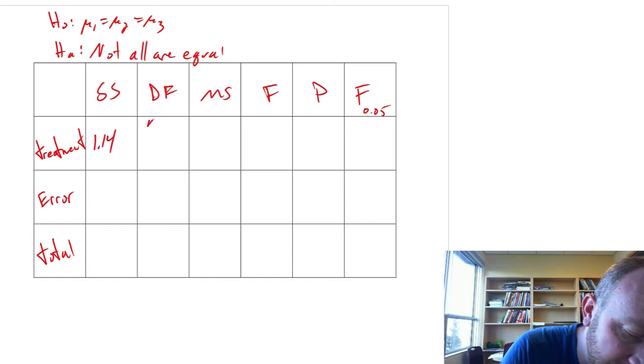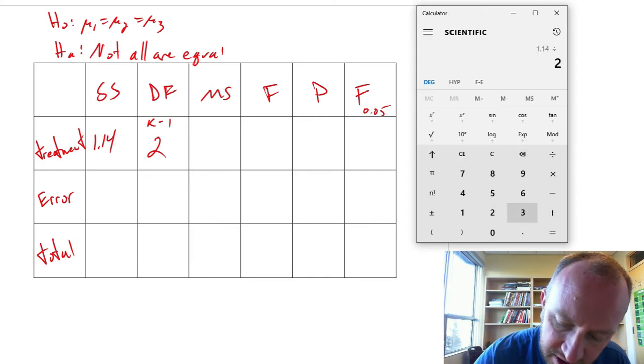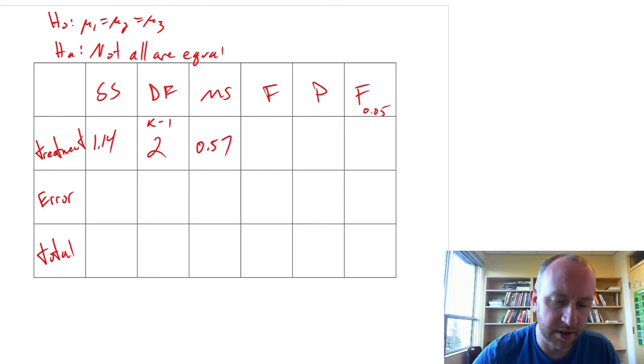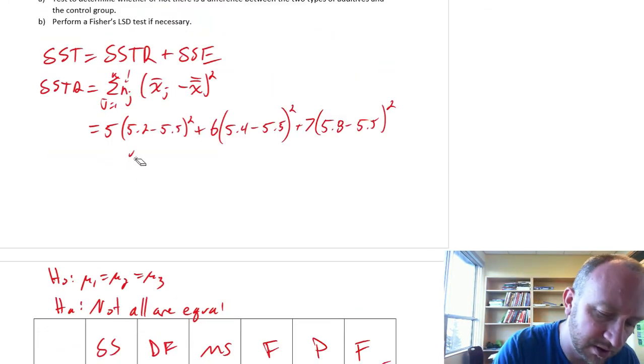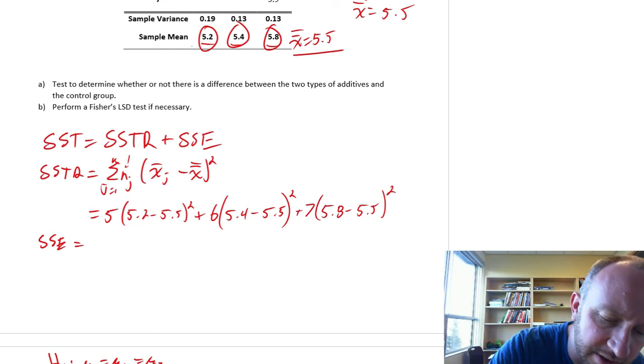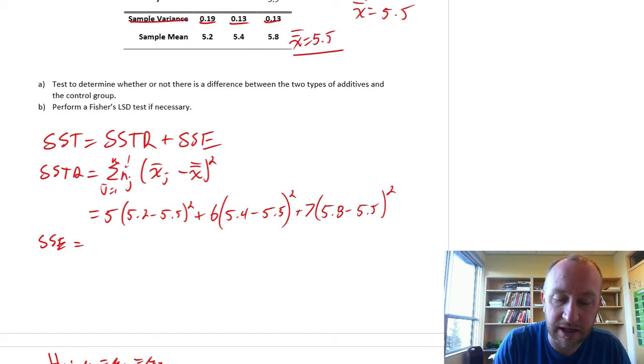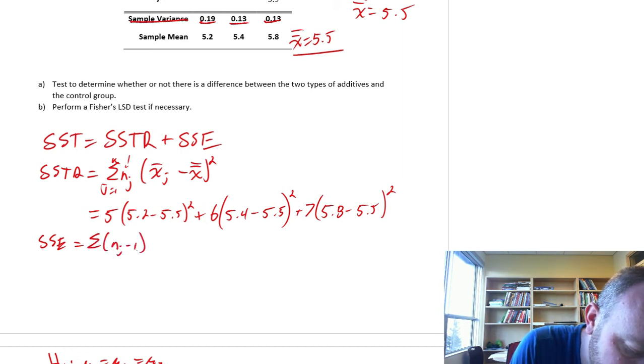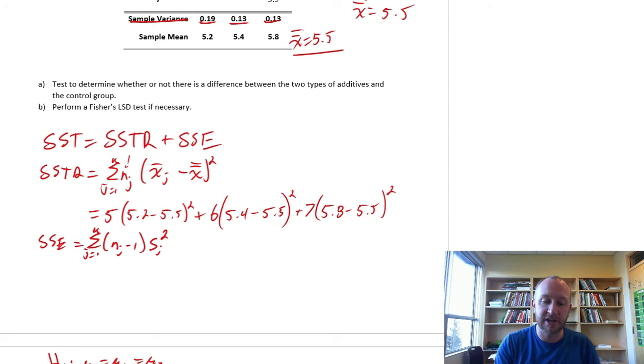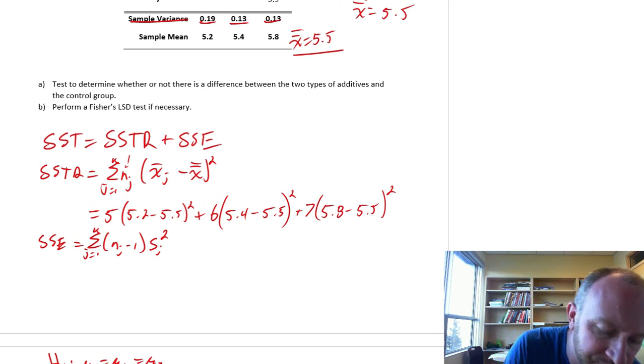Let's fill that in. 1.14. Degrees of freedom, k equals 3, and this is k minus 1, so this is going to be 2. 1.14 divided by 2 is 0.57. Good. Let's come back up here. Clear a little bit of room. And SSE is next. Now we're working with these values here. Notice this is the variance that we are given. And of course the formula, n sub j minus 1 times the variance. In some instances you may be given the standard deviation, in which case you would need to square it. Here we're given the variance so we have to make sure that we don't square it again.